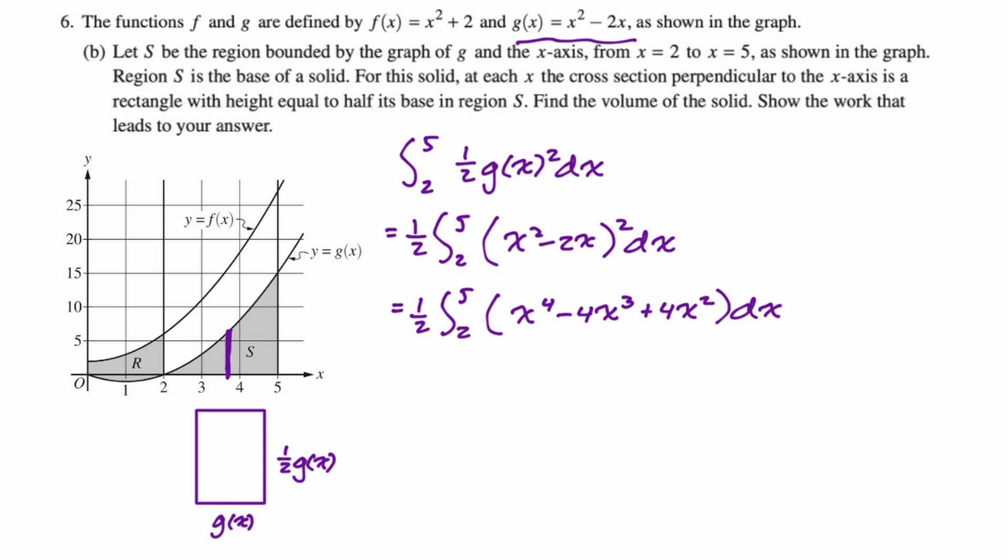Now we still need to integrate. We didn't do that yet. So it's one half. Now we're going to reverse the power rule. So it's going to be plus one times the reciprocal. And then here you're going to get plus one times reciprocal gives you four over four, so you just get minus x⁴. And then you get four thirds x³.